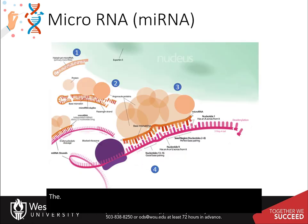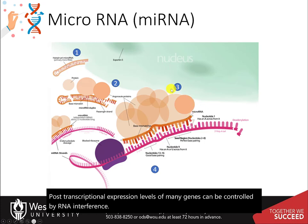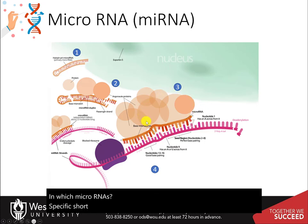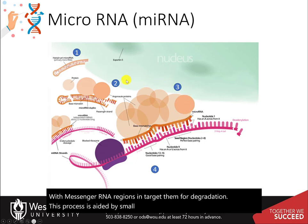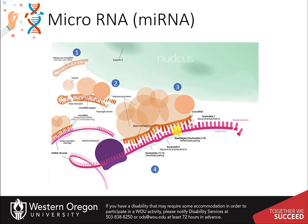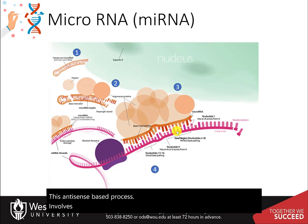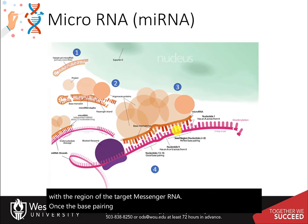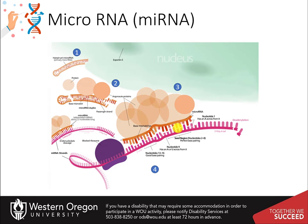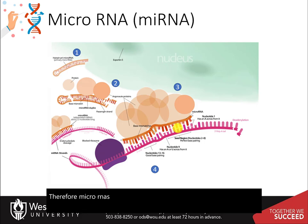The post-transcriptional expression levels of many genes can be controlled by RNA interference, in which microRNAs — specific short RNA molecules — pair with messenger RNA regions and target them for degradation. This process is aided by small proteins called argonauts. This antisense-based process involves steps that first process the microRNA so that it can base pair with the region of the target messenger RNA. Once base pairing occurs, other proteins direct the messenger RNA to be destroyed by nucleases. Therefore, microRNAs play an important role in protein expression.